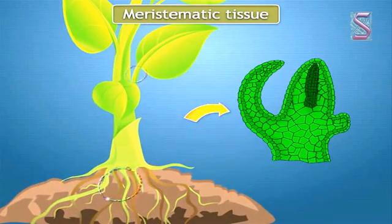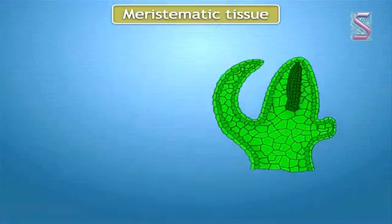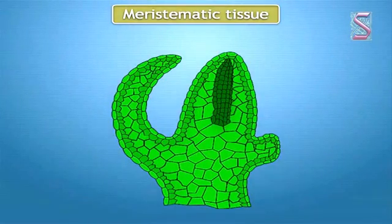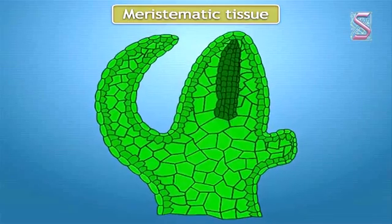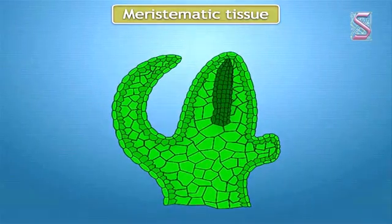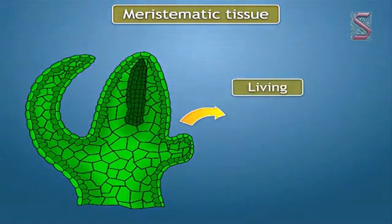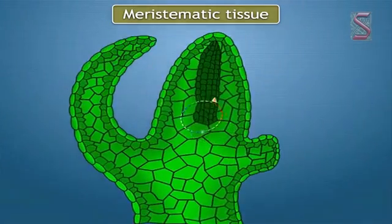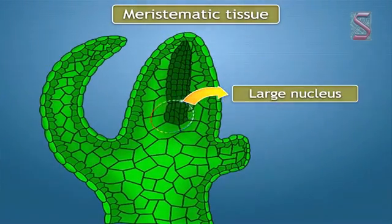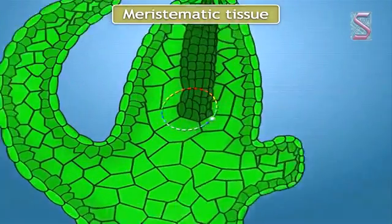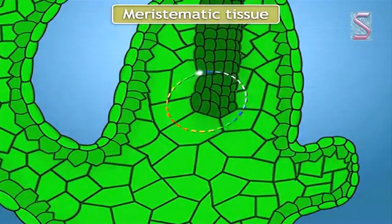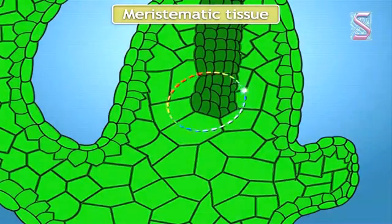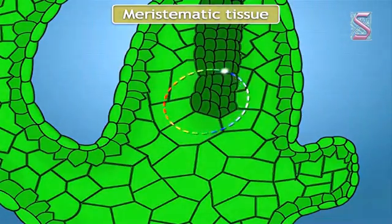Some other characteristics of meristematic tissues are: meristematic cells are living, cubical, and thin-walled. Each cell has a large nucleus. Cells are closely packed with no intercellular spaces.